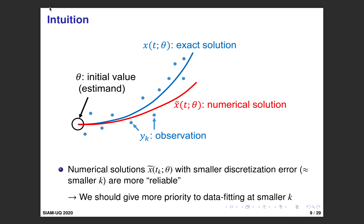The question is: can we obtain a better estimator by accounting for the discretization error? The intuition is that the numerical solution has smaller discretization error when time is small — the data points at the left are more reliable. So we should give more priority to data fitting at smaller k, the left side.